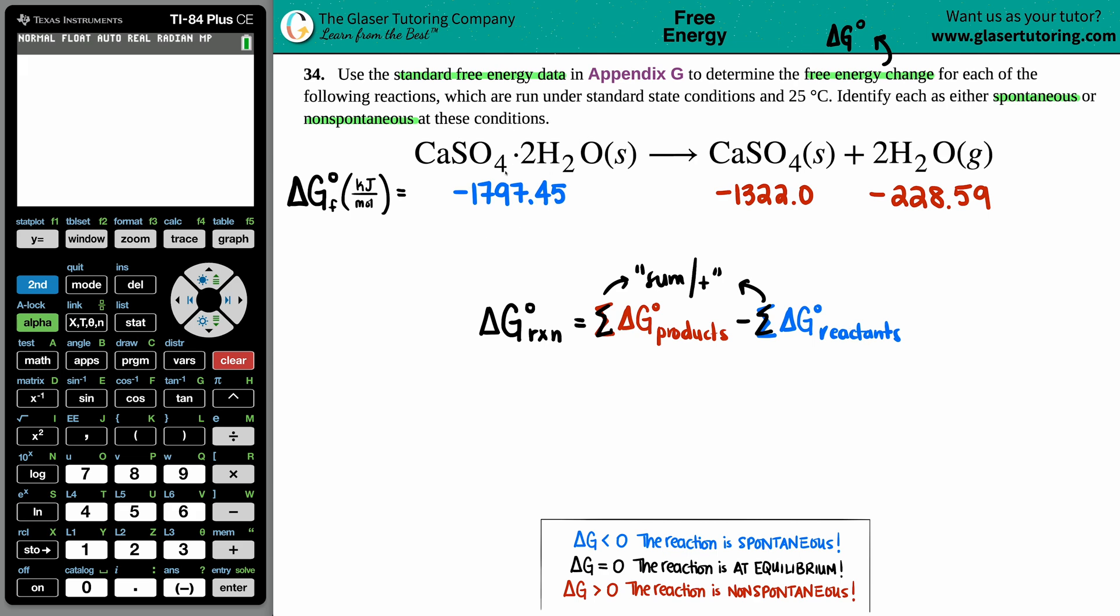Are these values going to be the same or different? That goes by the balanced equation, specifically the coefficients in front of your components. For the CaSO₄·2H₂O, there is only one of them. Keep in mind this is a hydrate, and the two in front of the water is not the coefficient for the entire hydrate—there was nothing there, so that's a one. Calcium sulfate also has nothing, so that's a one, and then you have two H₂O's.